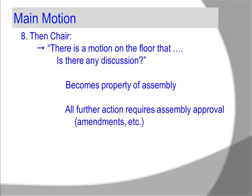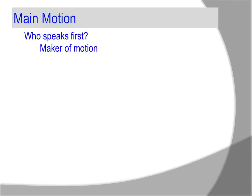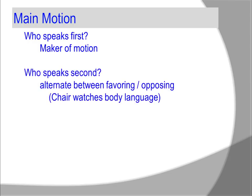All further action requires assembly approval — amendments, etc. Who speaks first? The maker of the motion. Who speaks second? It is best to alternate between favoring and opposing viewpoints on a motion. The chair watches body language to help determine this.